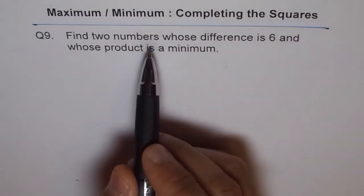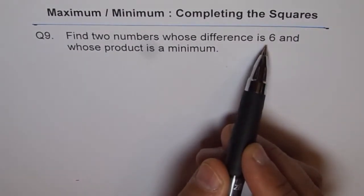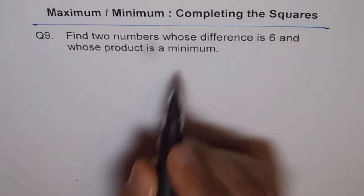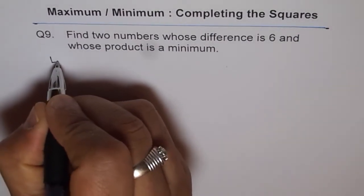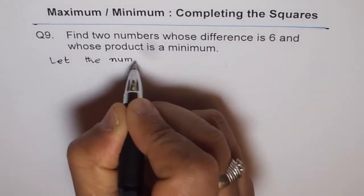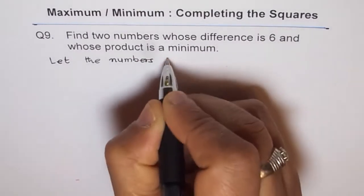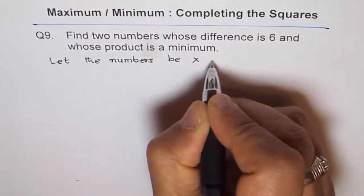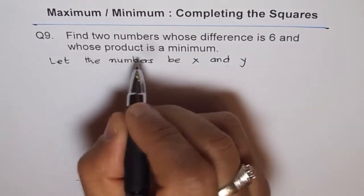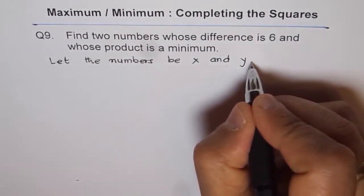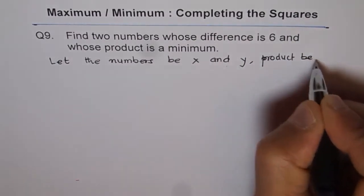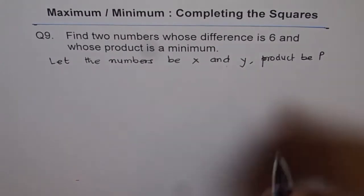The question is find two numbers whose difference is six and whose product is a minimum. So let's define our variables. First statement should be a let statement: Let the numbers be x and y, and product be P.